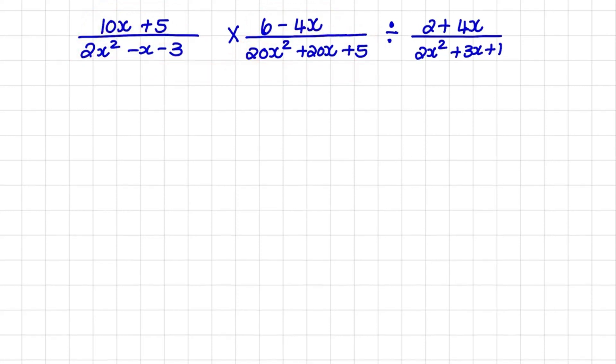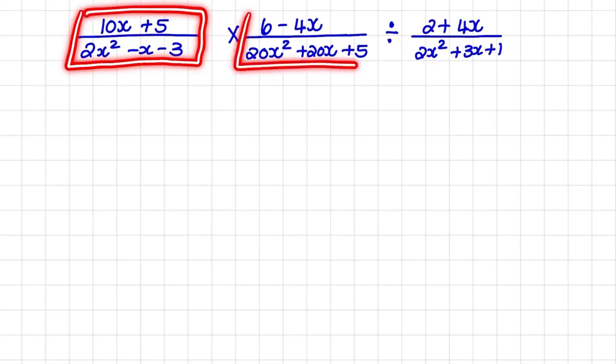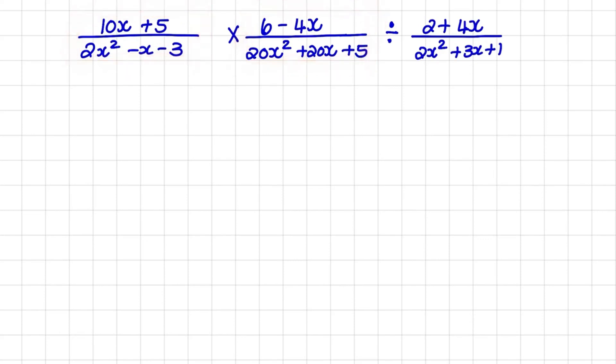What we rather want to do is see whether we can rewrite every fraction in a simpler format, and we will use factorization to do that. So in our first fraction, in the numerator, we have 10x plus 5, and I notice that the greatest common factor would be 5, and that leads me to 2x plus 1 as my bracket.